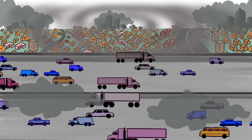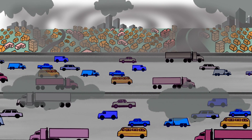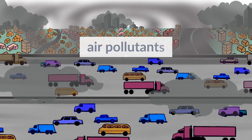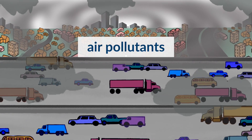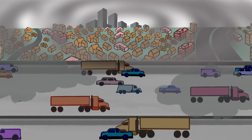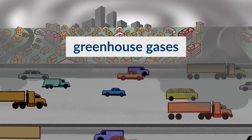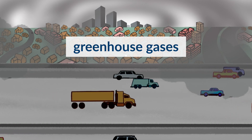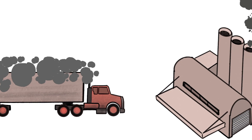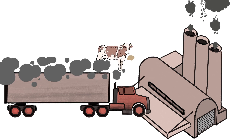Hundreds of chemical compounds are released into the air every day. Some of these chemical compounds are known as air pollutants because they impact human health and the environment, and others are known as greenhouse gases because they help warm the planet. Let's look at the different kinds of greenhouse gases and air pollutants that impact us most.